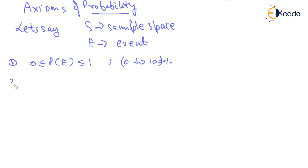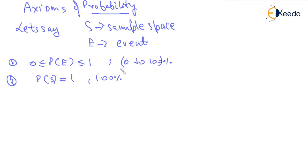Secondly, the probability of sample space is 1 or 100%. Because the sample space is a set of all the possible outcomes, and probability of sample space means at least one of the outcomes will definitely occur and it will cover the entire space. So it is 100%.